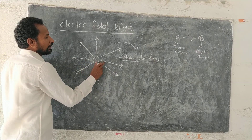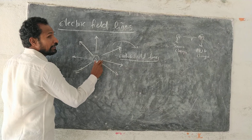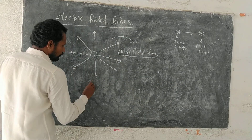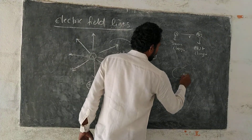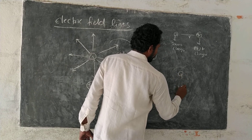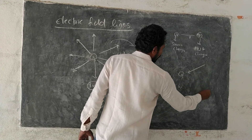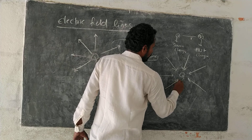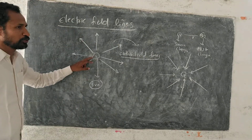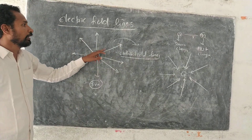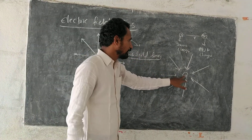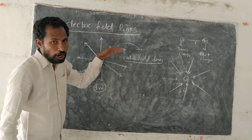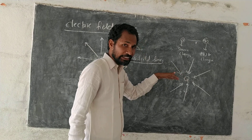For positive charge, the electric field lines act radially outwards. For negative charge, the lines of force act radially inwards. So for positive charge, the field lines start at the charge and end at infinity. For negative charge, they start at infinity and end at the charge. For positive charge, arrow direction is radially out; for negative charge, radially in.